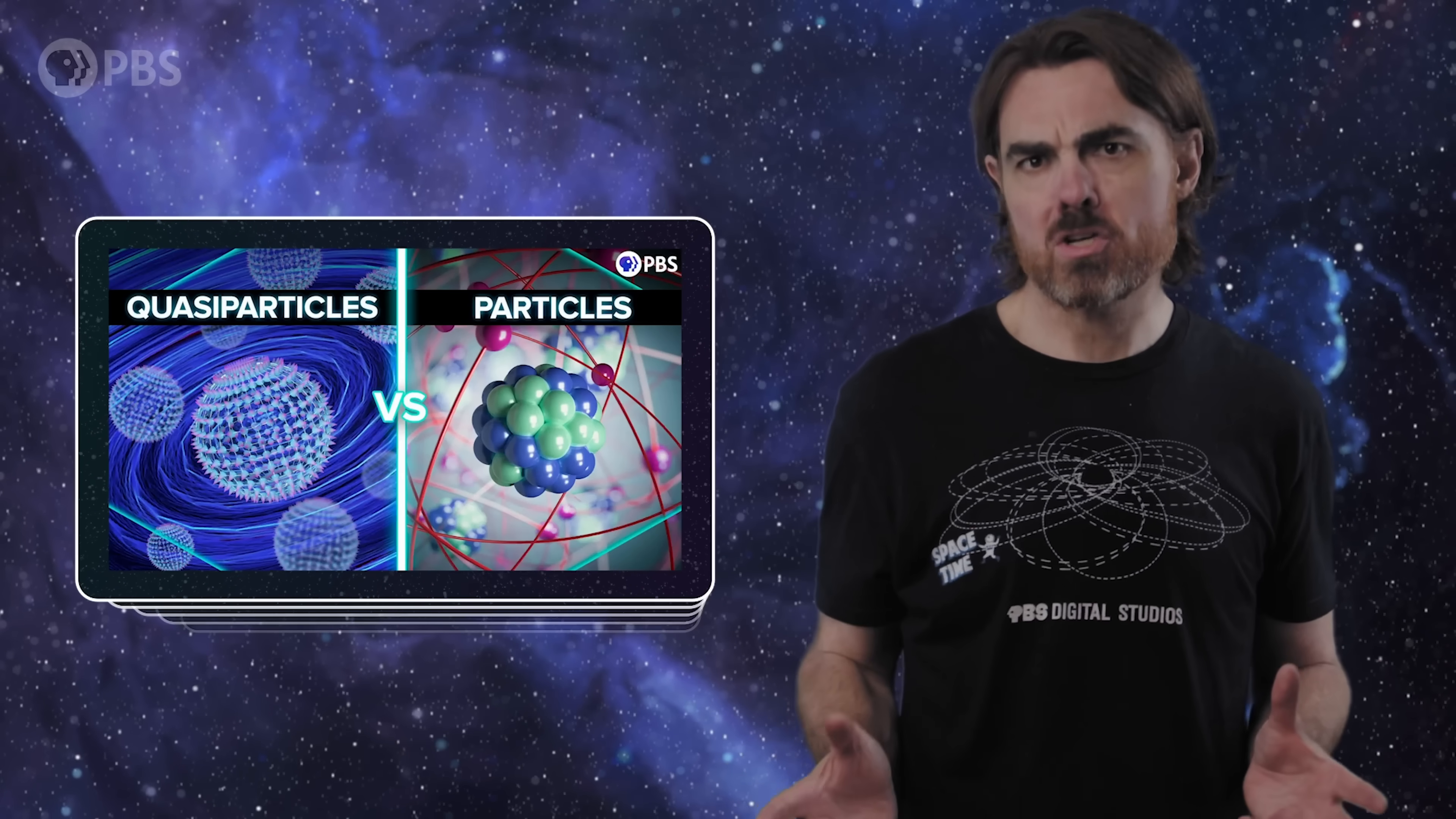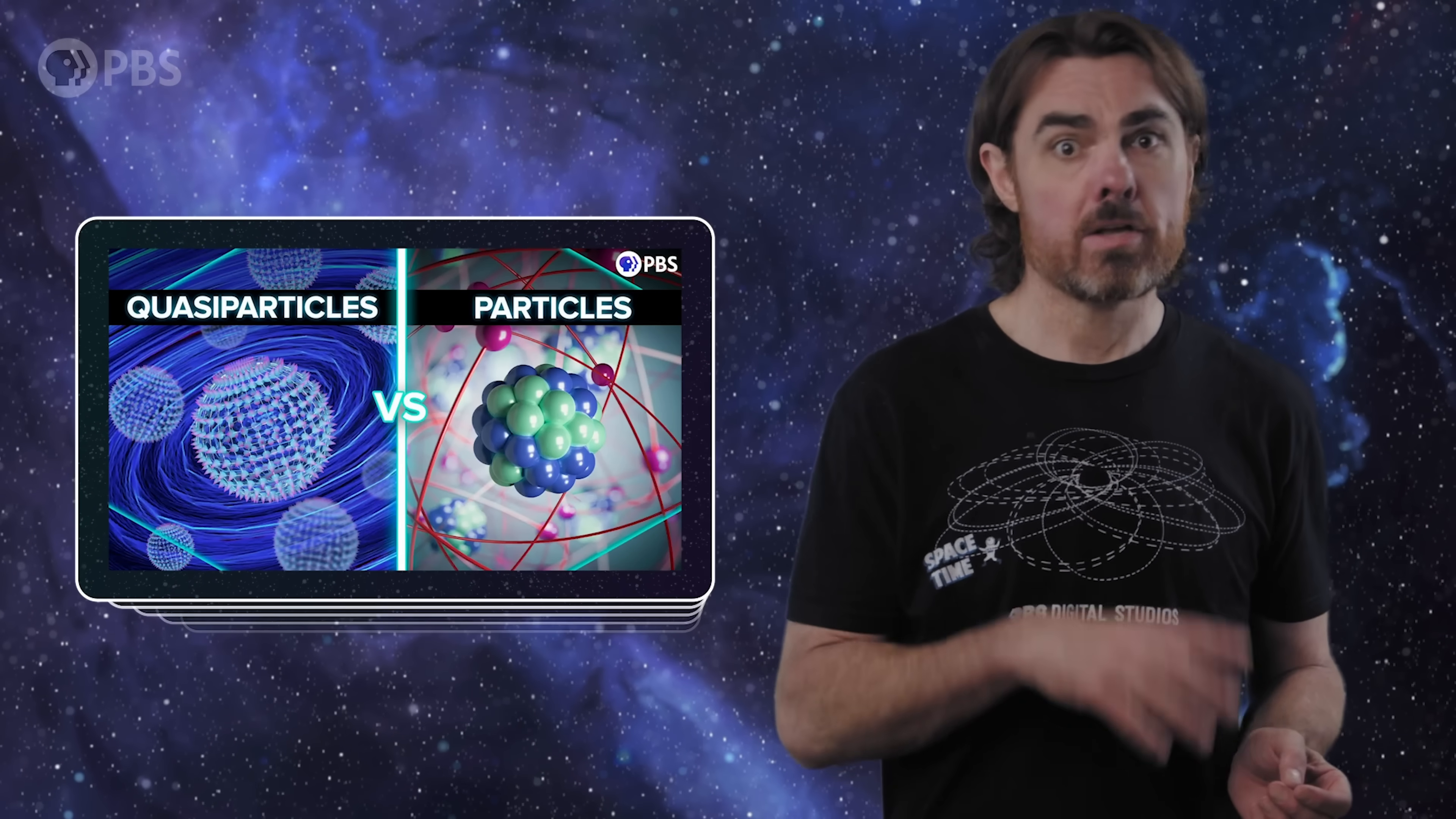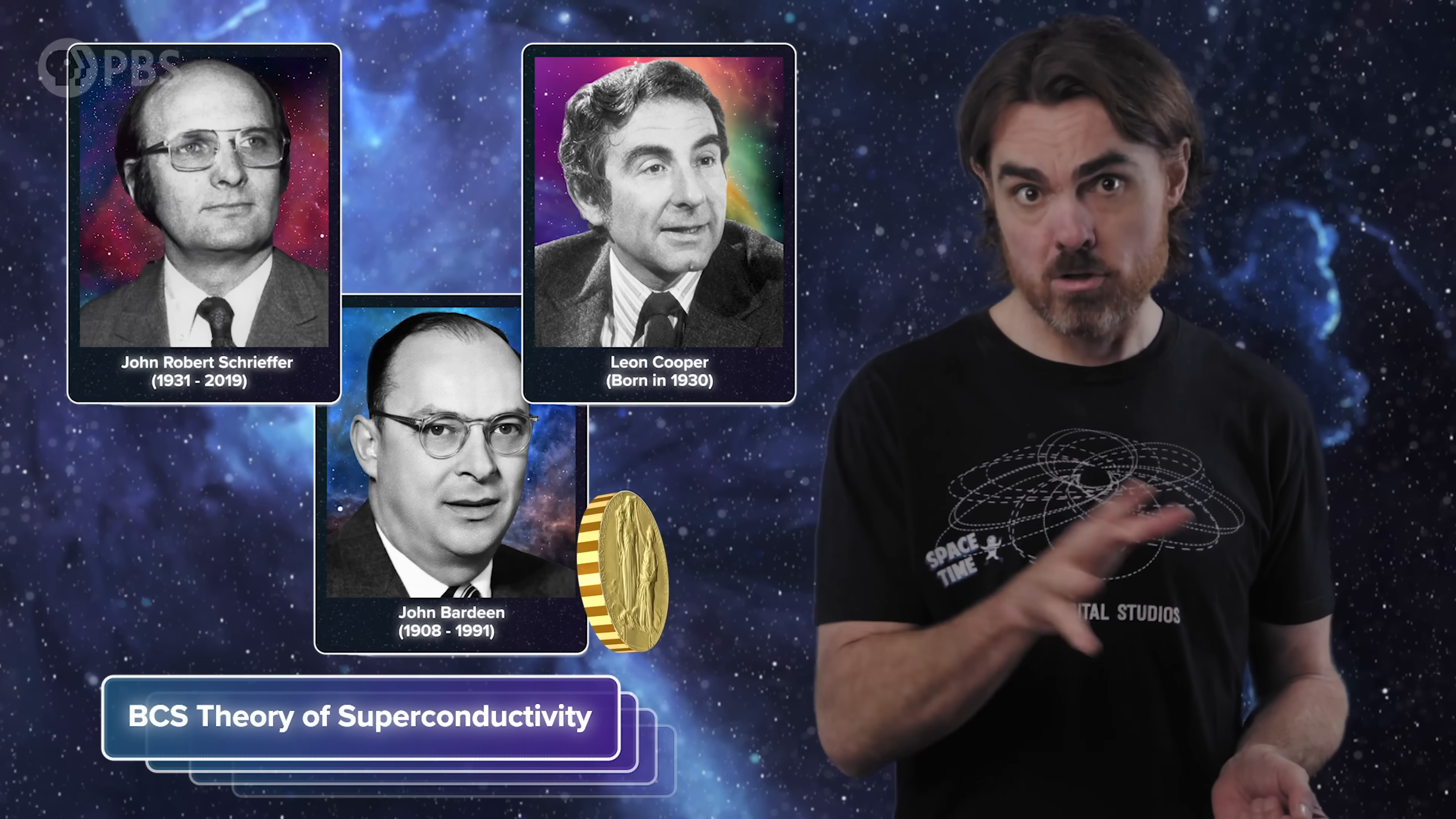And if you've watched our quasiparticle episode, then you may remember the answer. But let me give you a refresher. So we're now in 1957. John Bardeen, Leon Cooper, and John Robert Schrieffer came along and changed everything. Together, these three developed what is known as BCS theory of superconductivity, for which they won the 1972 Nobel Prize. And if you weren't counting, this is the third superconductor-related Nobel.